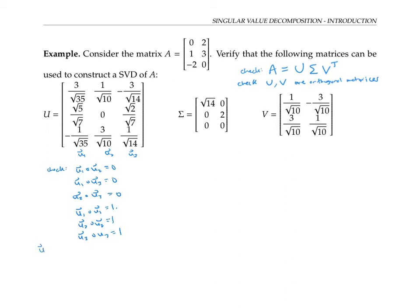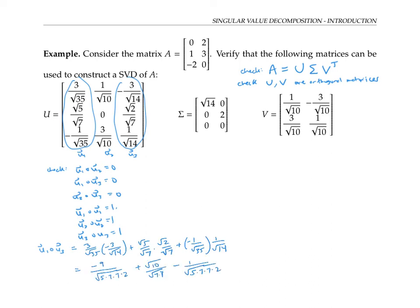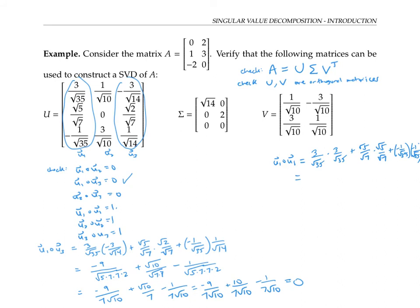I'll check that u₁ dot u₃ is zero. That's the first column dot product with the third column. That can be rewritten as follows. If I pull out the sevens from the square roots and rewrite the middle fraction by multiplying on the top and bottom by the square root of 10, I do indeed get zero. I'll also verify that u₁ dotted with u₁ is equal to one. When I take this dot product, that simplifies to the following, which does indeed add up to one.